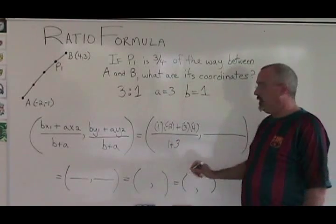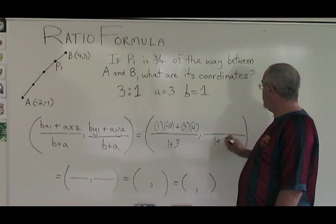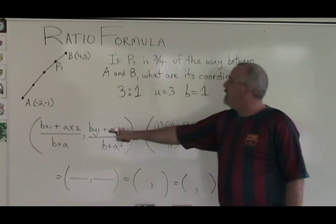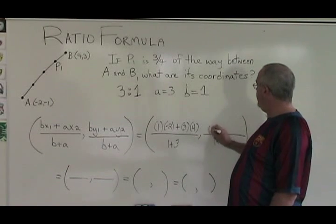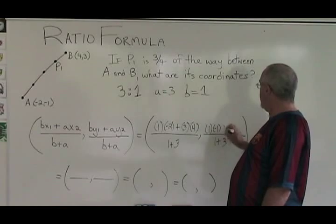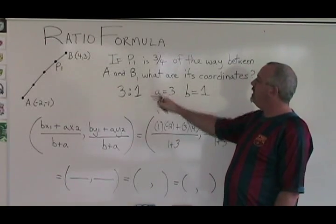The y-coordinates formula also has B plus A in the denominator, so we have one plus three again. BY1 becomes one times negative one, plus AY2 becomes three times three.